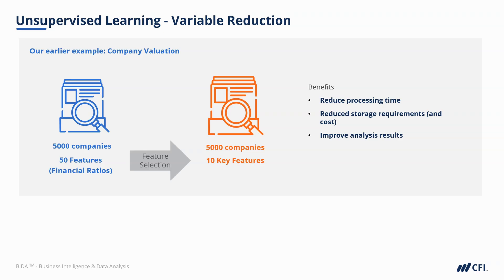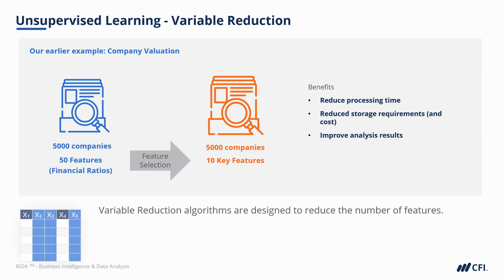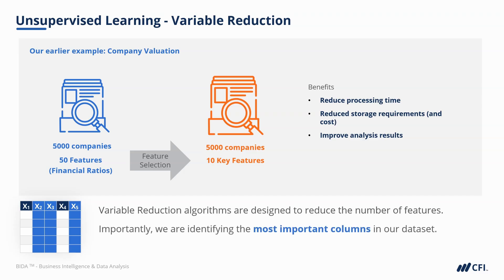In contrast to clustering, where we were clustering rows, variable reduction algorithms are designed to reduce the number of features — identifying the most important columns in our data set. In general, unsupervised learning models don't give us as many specific answers as supervised models, but they typically give us a stepping stone to help us in the right direction with further analysis.